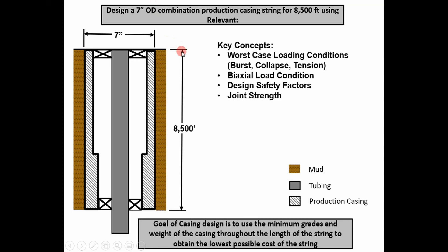Today I'm going to show you how to design this combination string in seven steps. Why do we design a combination string? Well, if I can use a lower grade, lighter weight casing at the top and it holds up to the conditions we're designing for, why wouldn't I do that? The goal of casing design is essentially to design this casing string with the minimum grades and weights along the length of the string in order to attain the lowest possible cost.